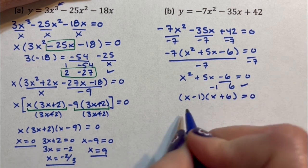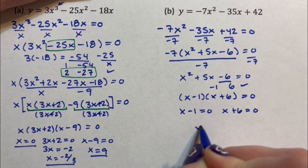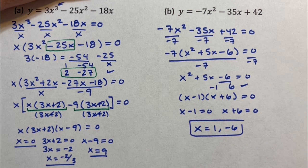Once again, I have the same thing. x - 1 = 0 or x + 6 = 0, which means x = 1 or -6. And we are done.